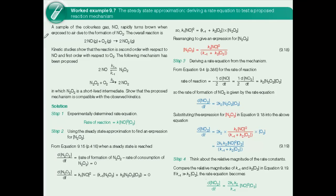In worked example 9.7, you're asked to use your knowledge of complex reactions to show whether the proposed mechanism for a reaction is compatible with the observed kinetics. The overall reaction is shown here: nitrogen monoxide reacts with oxygen to form the brown gas nitrogen dioxide. Kinetic experiments show that the reaction is second order with respect to NO and first order with respect to oxygen. Note that the equation involves three molecules of reactants, so it must be a complex reaction.